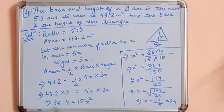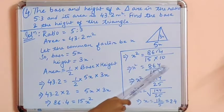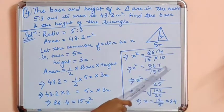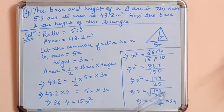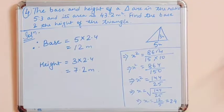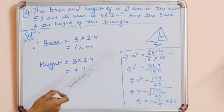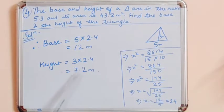Taking the square root: x = √(144/25) = 12/5 = 2.4. So the value of x is 2.4. Base = 5x = 5 × 2.4 = 12 m, and height = 3x = 3 × 2.4 = 7.2 m.